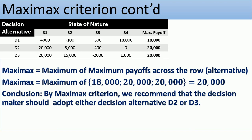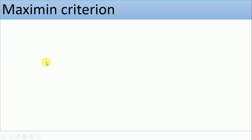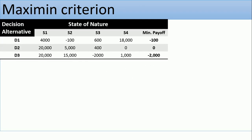By the maximax criterion, we recommend that the decision maker should go for D2 or D3, because 20,000 — the maximum value — lies on decision alternatives D2 and D3. After calculating the maximum across each row, you choose the maximum of all those values, which is 20,000, and go back to the table to identify where that value appears. Our interest is on the decision alternatives, so we recommend D2 or D3.